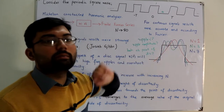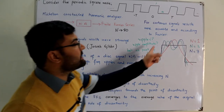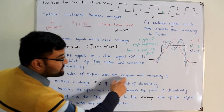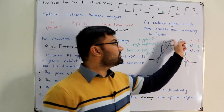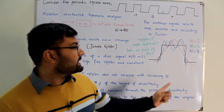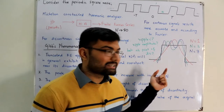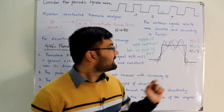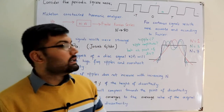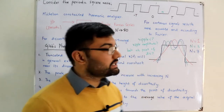Point two: the peak values of the ripples do not increase with increasing n. For n=1 (red), n=3 (green), and n=7 (blue), the amplitudes of the ripples are the same. Whatever the value of n, the amplitude of the ripples remains constant.